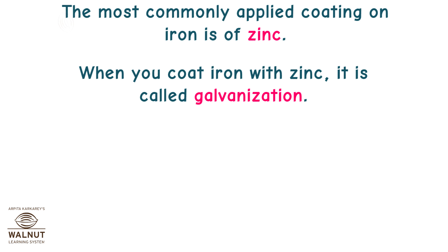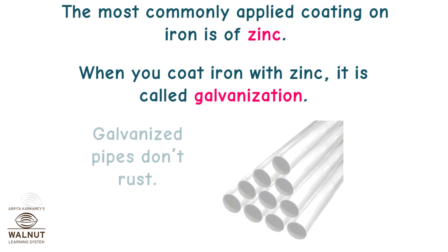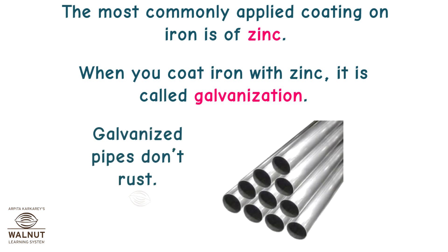The most commonly applied coating on iron is of zinc. When you coat iron with zinc it is called galvanization. Galvanized pipes don't rust.